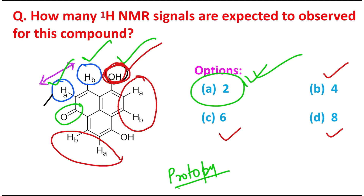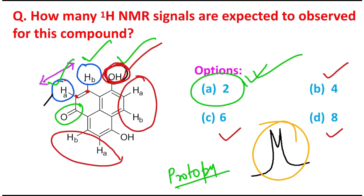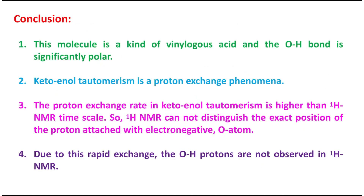As for the nature of the HA and HB signals, they will actually be doublets. Since they are attached to adjacent carbons, splitting occurs — each proton coupled to one neighboring proton gives a doublet. So both HA and HB will each result in a doublet signal.